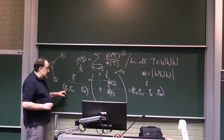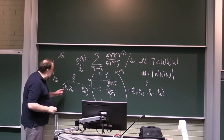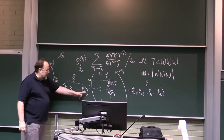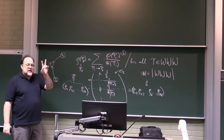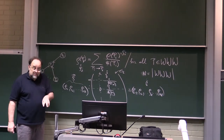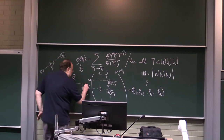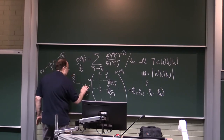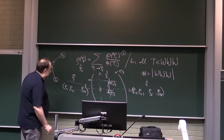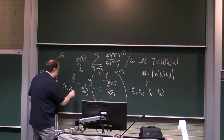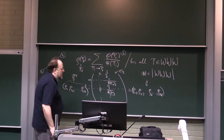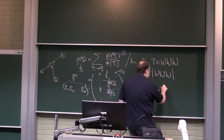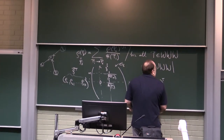Now because this is a rho vector, and in linear algebra we are used to treating vectors as columns, we write this as rho transpose — because it's made into a row.